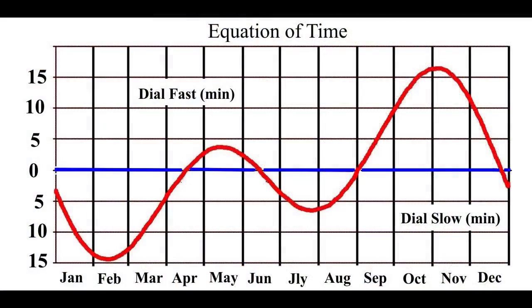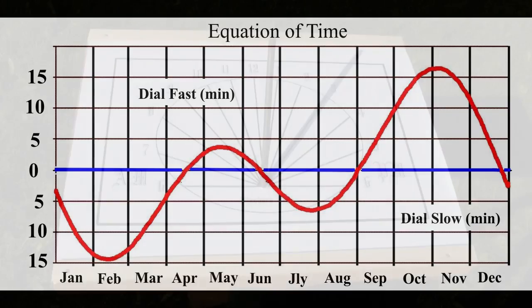Studying the equation, we can see that there are 4 dates when clock time and sundial time coincide. We can also see that the sundial is running 16 minutes fast in early November, and 14 minutes slow in mid-February. These corrections apply in all parts of the world. If you have a sundial, you can use the equation of time to correct sundial time to correspond with clock time.